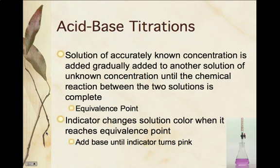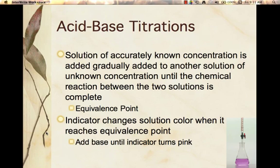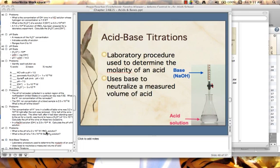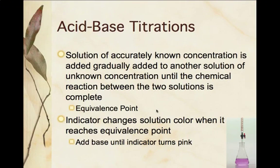So the solution of an accurately known concentration is added gradually to another solution of unknown concentration. And you add a solution that you know the concentration of. And once you get to the point where the reaction is complete, that's called the equivalence point. And we use an indicator and there's lots of different indicators that change different colors. We use phenolphthalein because it changes color at the correct pH that we want to change color. In acidic it's going to be clear and then we add base until it turns pink.